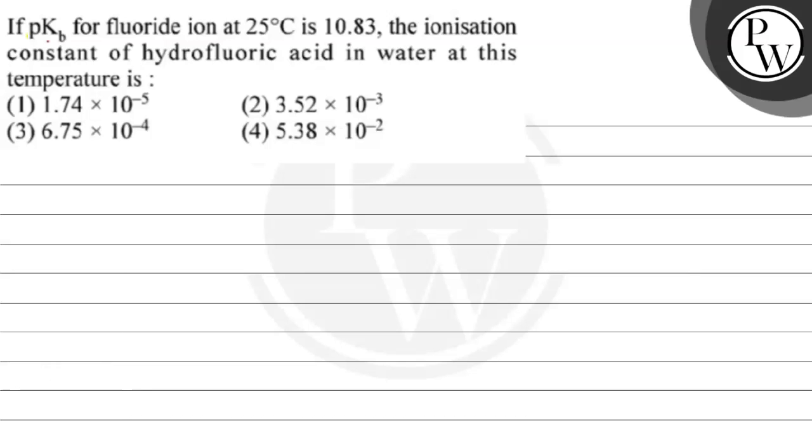Hello Bacho, let's read this question. The question says, if pKa for fluoride ion at 25 degrees Celsius is 10.83, the ionization constant of hydrofluoric acid in water at this temperature is: 1.74 × 10^-5, 2. 3.52 × 10^-3, 3. 6.75 × 10^-4, option 4. 5.38 × 10^-2.